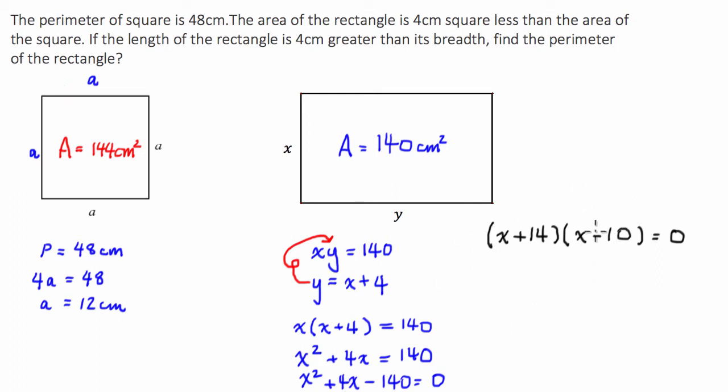The null factor law says that if we've got two numbers that are multiplied together to equal 0, either X plus 14 equals 0, or X minus 10 has to equal 0. So from here, I can say that X is going to either equal negative 14, or X is going to equal 10.